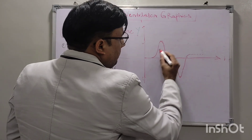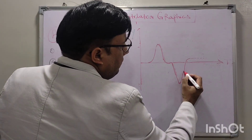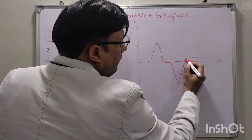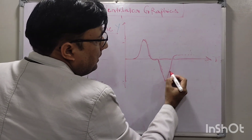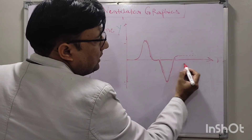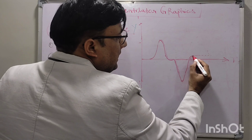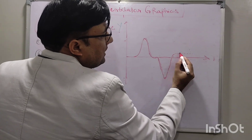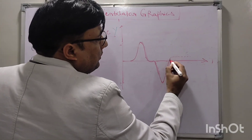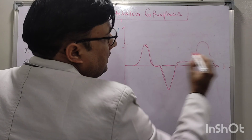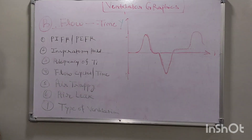Next, we can see air leak — peri-tubular leak or any air leak — in this graph. In air leak, the expiratory flow will go above the baseline. In air trapping, the flow was not reaching the baseline, but in air leak the flow goes above the baseline, and then the next cycle starts. This is the air leak pattern.